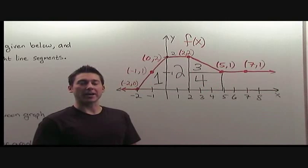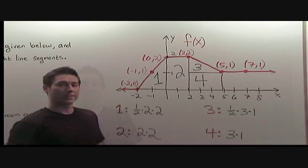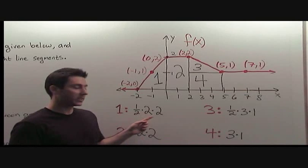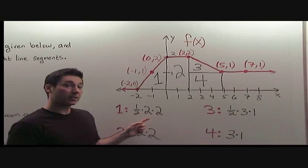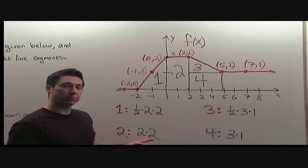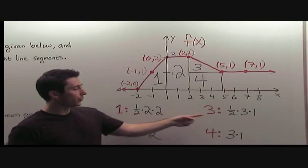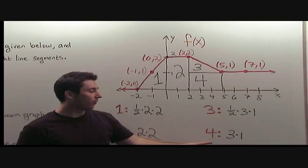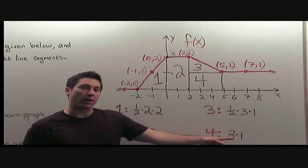Let's write down the area for each piece separately, then we can add them all up. The first area is 1 half times 2 times 2. The second area is 2 times 2. The third area is 1 half times 3 times 1, and the fourth area is 3 times 1.